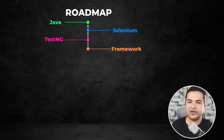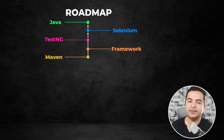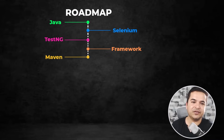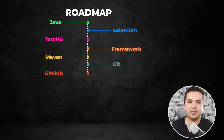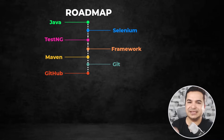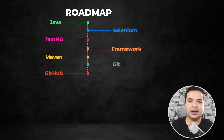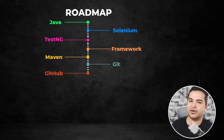Once you're done with the framework, we'll talk about how to integrate with Maven — how to create a Maven build, the different plugins we use, and the different dependencies we need. Once you're comfortable, we'll move to Git and GitHub. We will push our code to GitHub, cover different Git commands, and see how to create pull requests, clone repositories, and all the options available on GitHub.